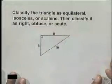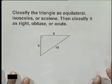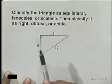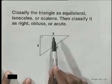Here we're going to classify a triangle as equilateral, isosceles, or scalene. Then we'll classify it as right, obtuse, or acute. In our triangle, we notice that the side lengths are 6, 8, and 10.